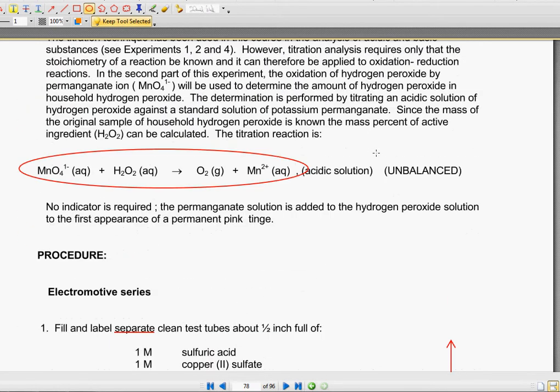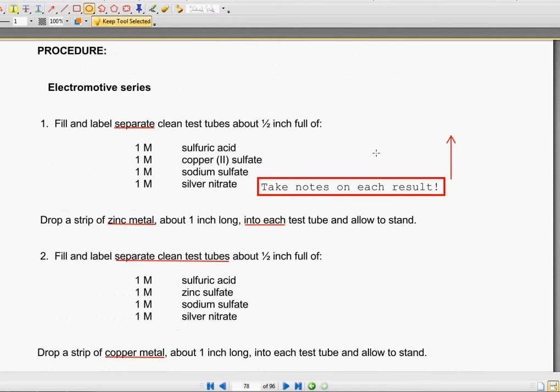So essentially, the first part of this is going to be the electromotive series. So we're just going to mix a bunch of different substances. You're going to have separate test tubes of sulfuric acid, copper sulfate, sodium sulfate, and silver nitrate. And we're going to drop some zinc into one of them and take notes of each result as it occurs.